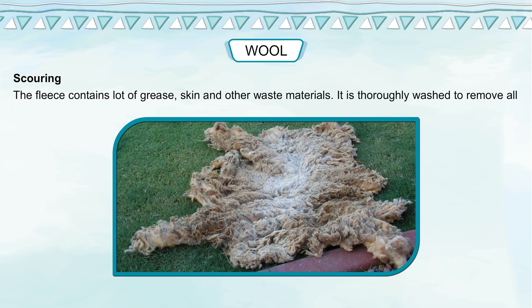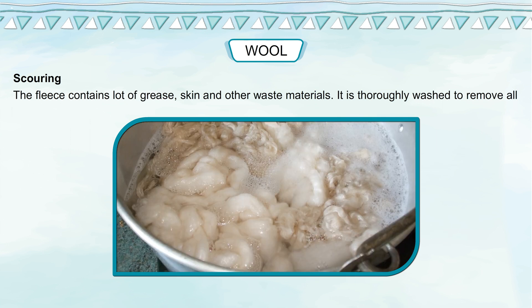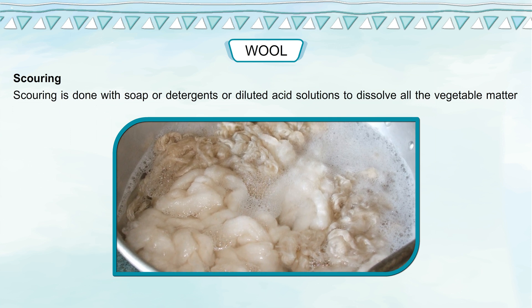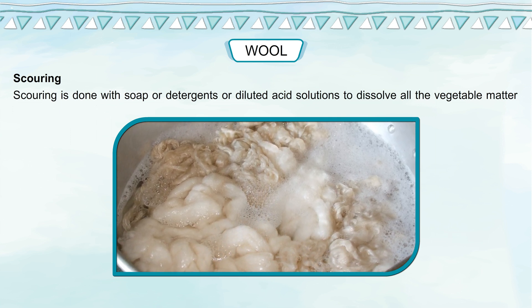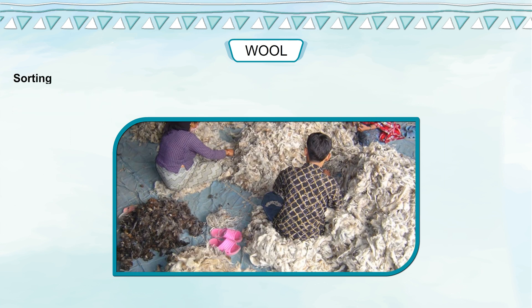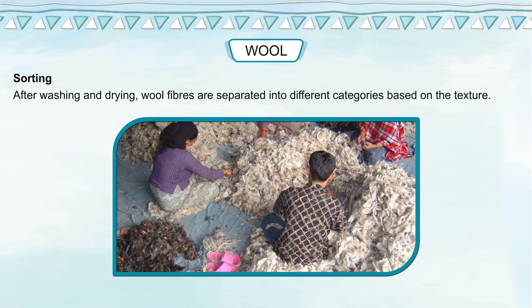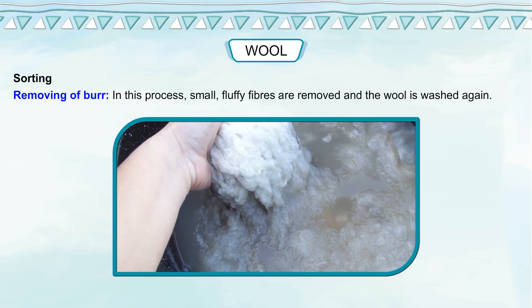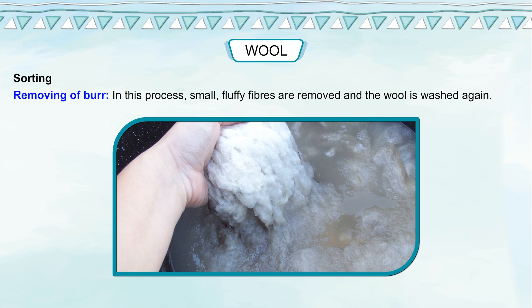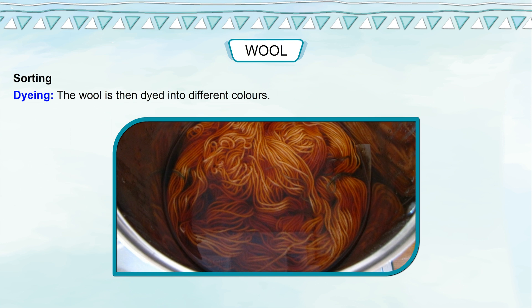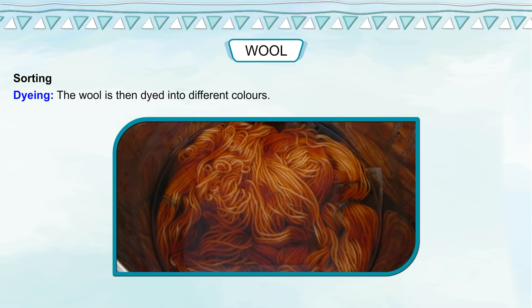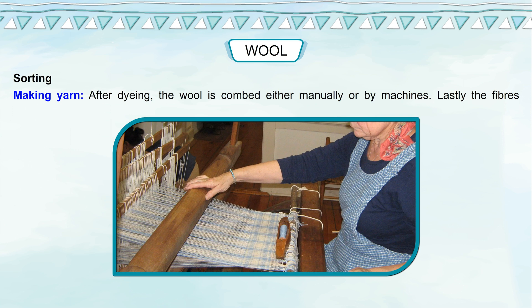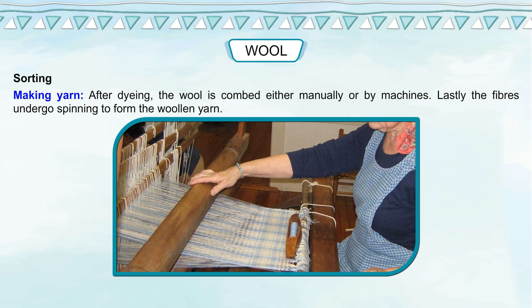The fleece contains lots of grease, skin and other waste materials, so it is thoroughly washed — a process called scouring — using soap, detergents or diluted acid solutions to dissolve all vegetable matter and grease. After washing and drying, wool fibers are sorted into different categories based on texture. Small fluffy fibers are then removed in a process called removing of burr, and the wool is washed again. The wool is then dyed into different colors, combed either manually or by machines, and finally the fibers undergo spinning to form woolen yarn.